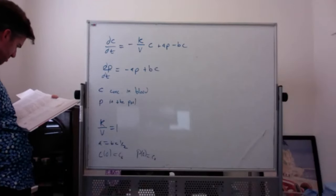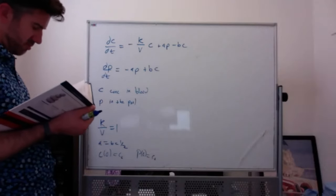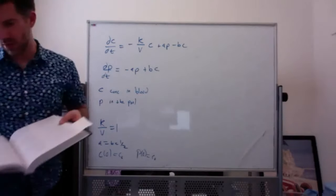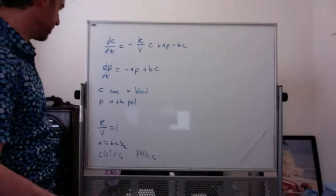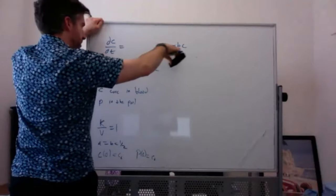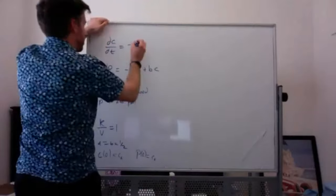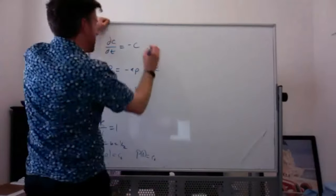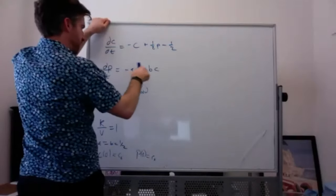They give us numbers: k/v = 1, a = b = 1/2, c(0) = c₀, and p(0) = c₀ — that feels like it might be a typo. So after substituting, we get dc/dt = −(3/2)c + (1/2)p, and dp/dt = (1/2)c − (1/2)p. The question asks us to classify the equilibria.